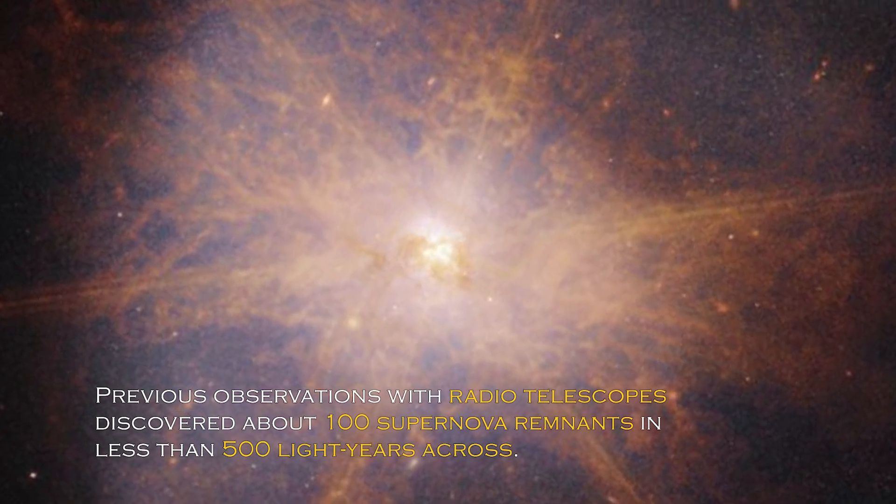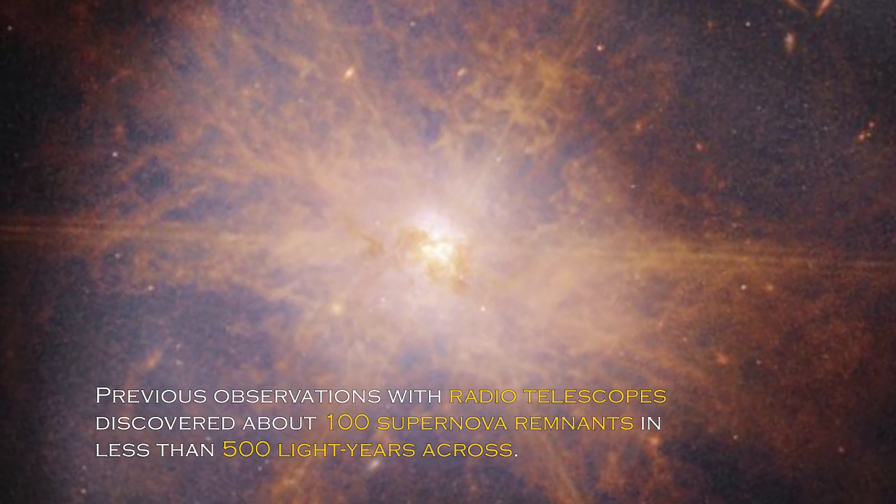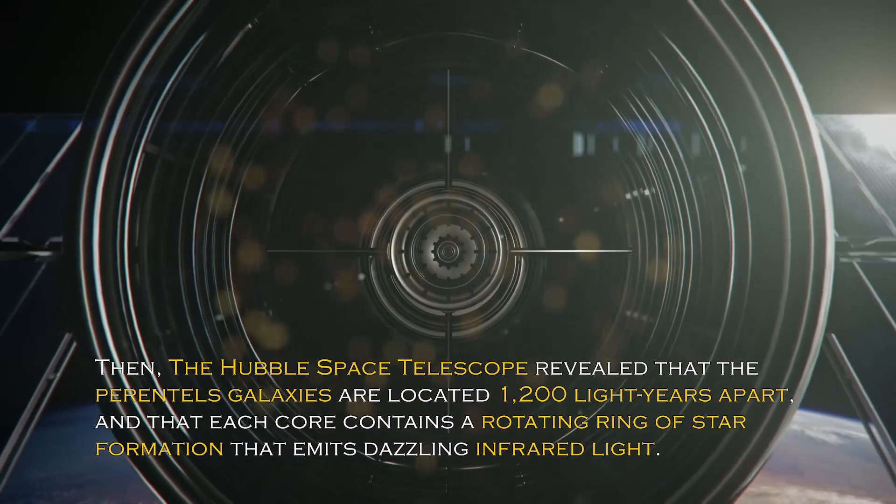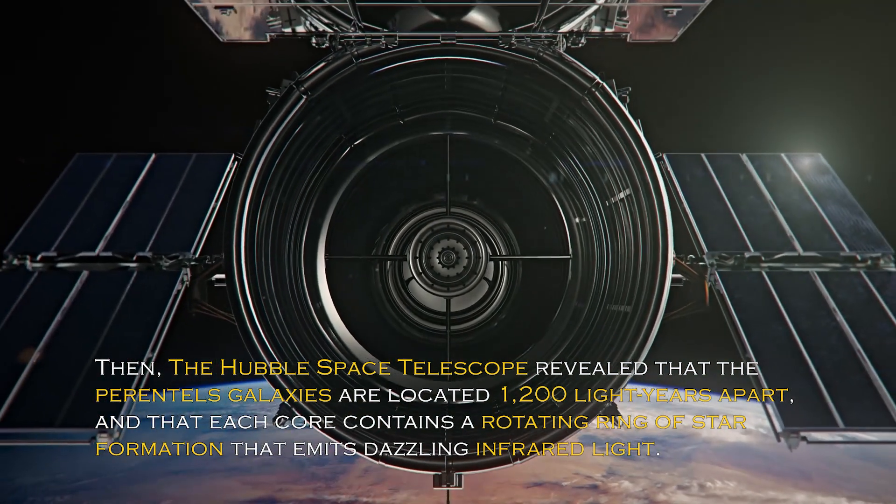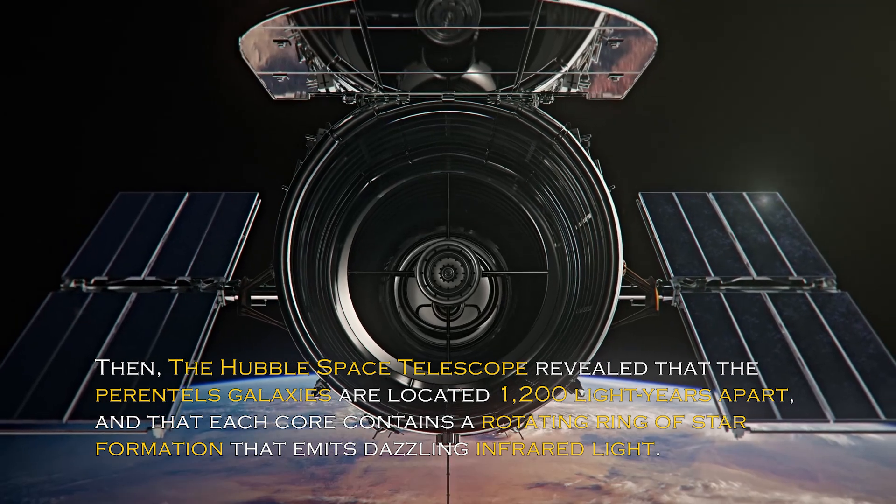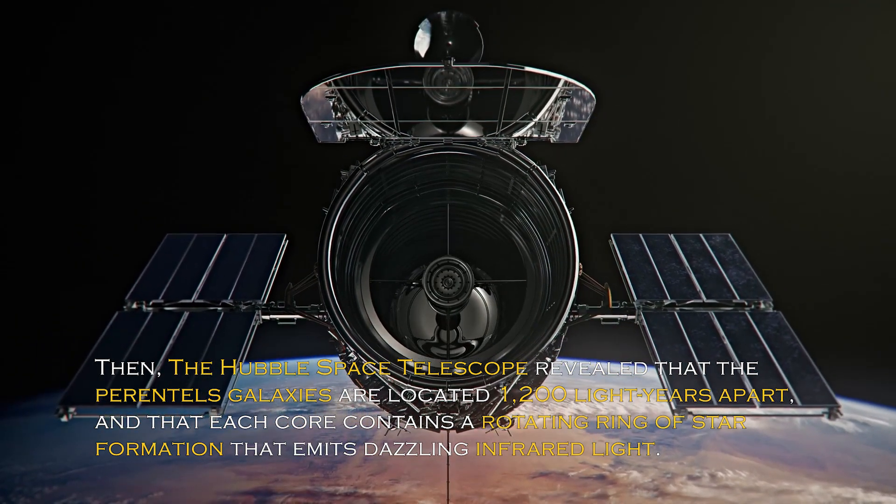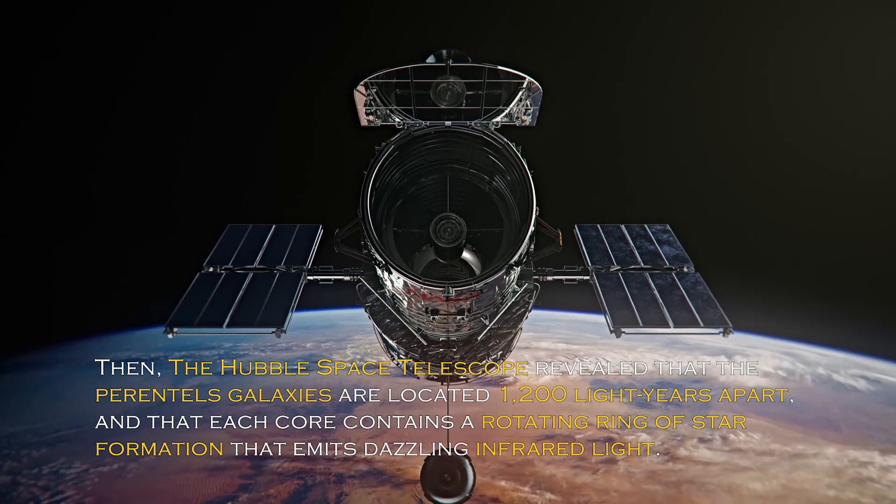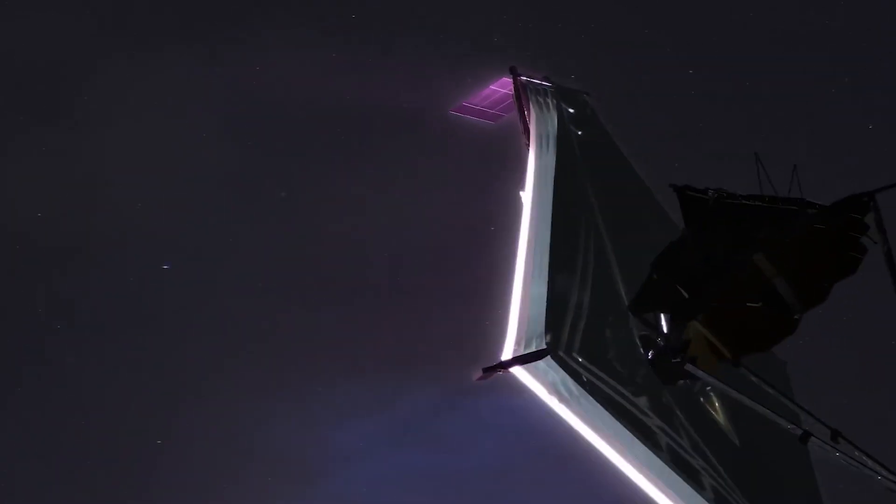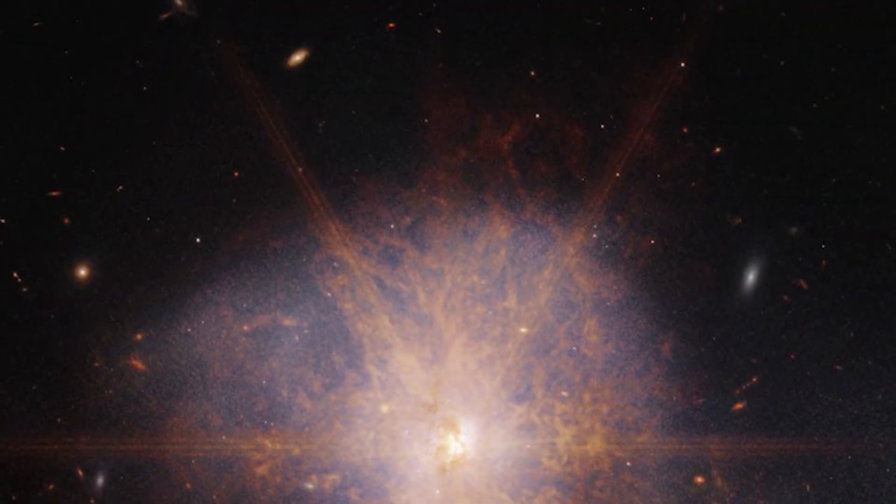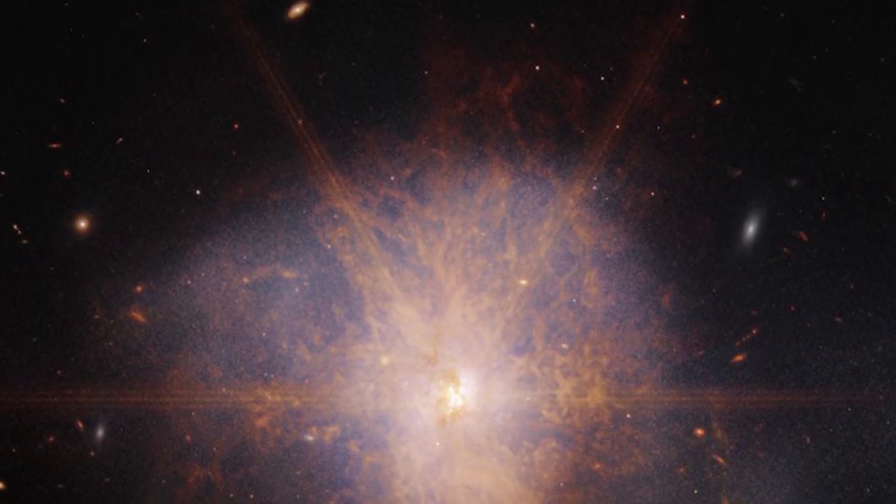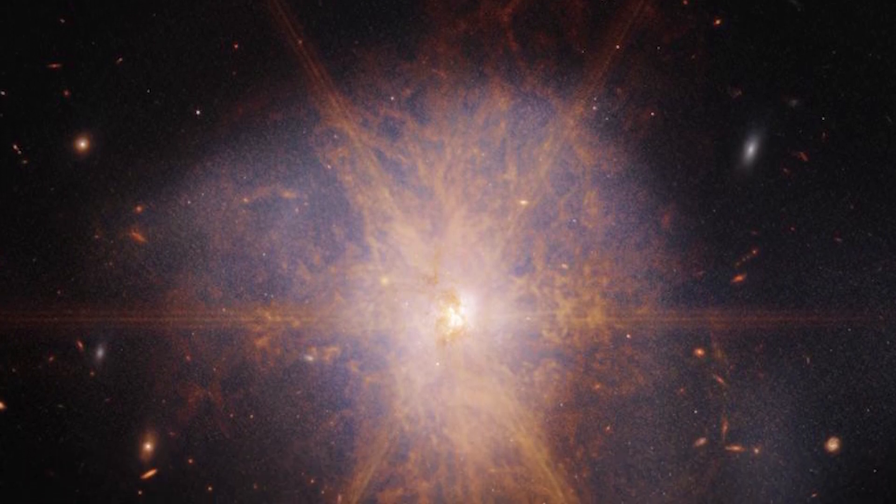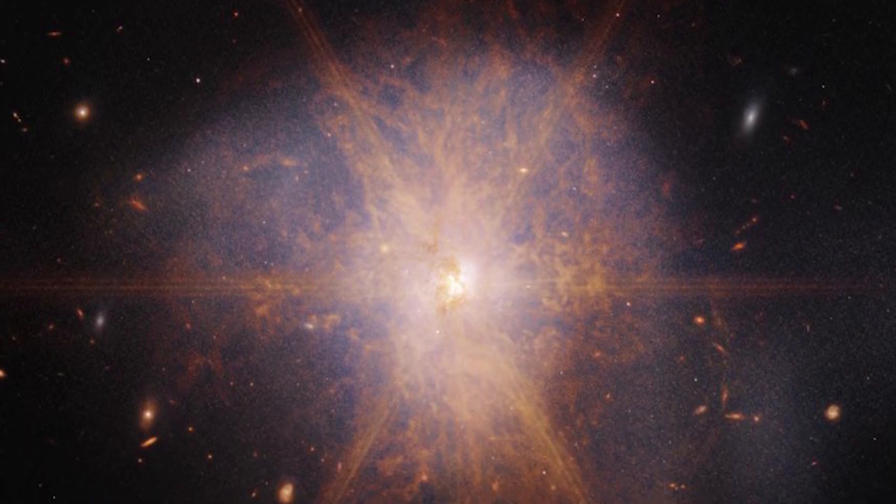Previous observations with radio telescope discovered about 100 supernova remnants in less than 500 light-years across. Then, the Hubble Space Telescope revealed that the parent galaxies are located 1,200 light-years apart, and that each core contains a rotating ring of star formation that emits dazzling infrared light. The latest views from the James Webb Space Telescope shows an impressive galactic merger of the two galaxies. This image also shows faint tidal tails extending from the outskirts of the merger, indicating the gravitational pull between the two galaxies.